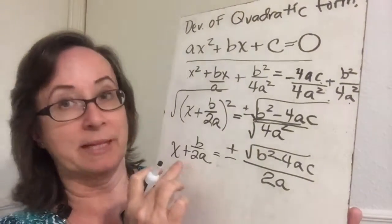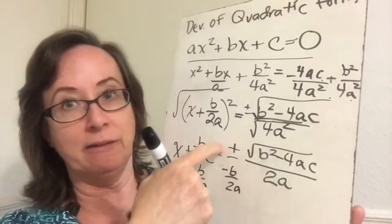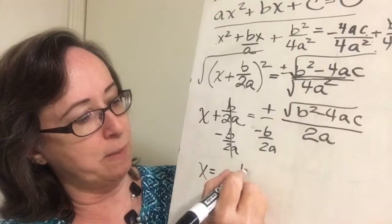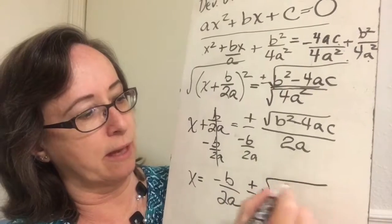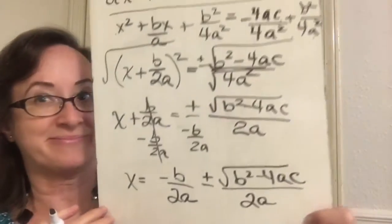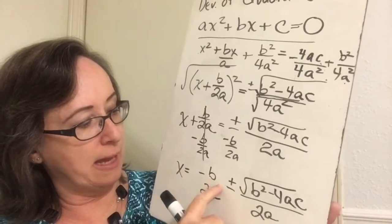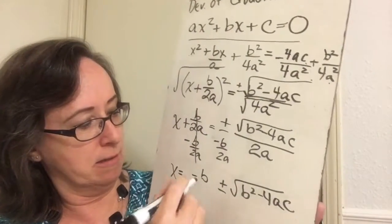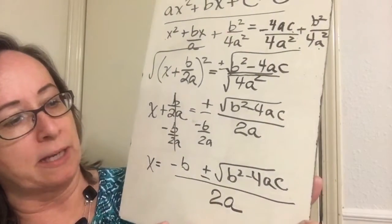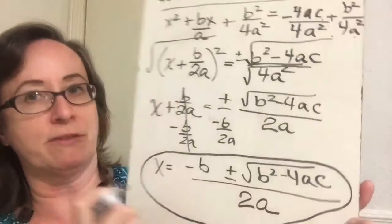Last step. So now I'm going to subtract the b over 2a right in front of my plus and minus. And my final answer is x equals negative b over 2a plus or minus the square root of b squared minus 4ac, all over 2a. And because I have a 2a and both of these parts are real, I may write all of it over one nice long denominator. Negative b plus or minus the square root of b squared minus 4ac over 2a is what x will equal. This is your quadratic formula derived for you.